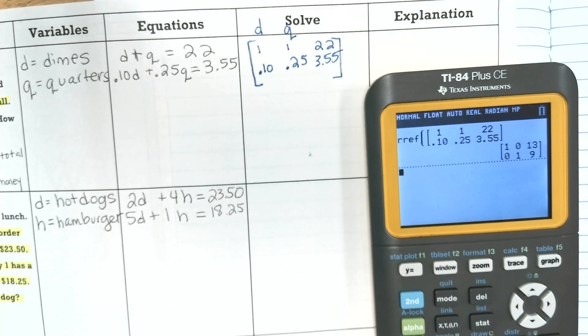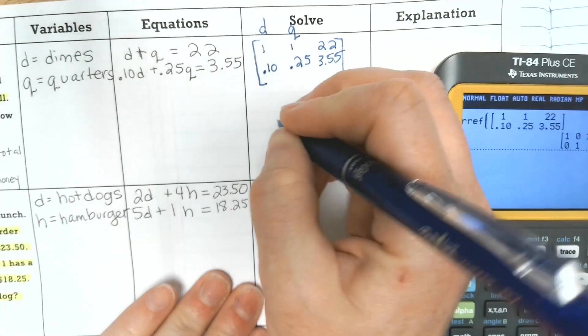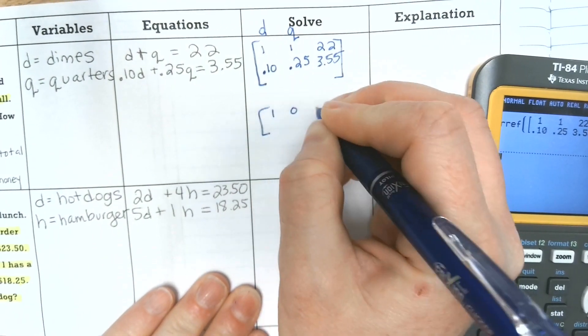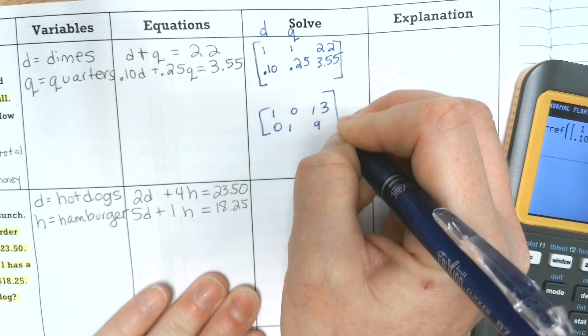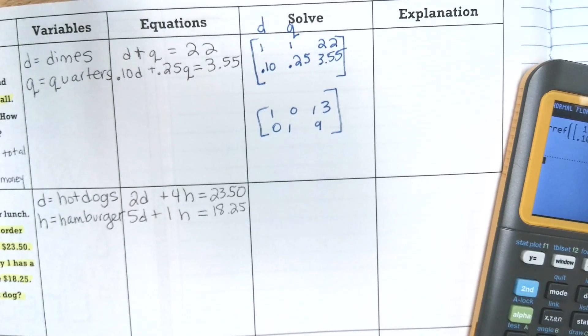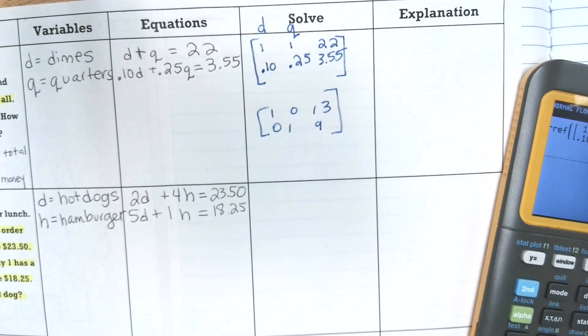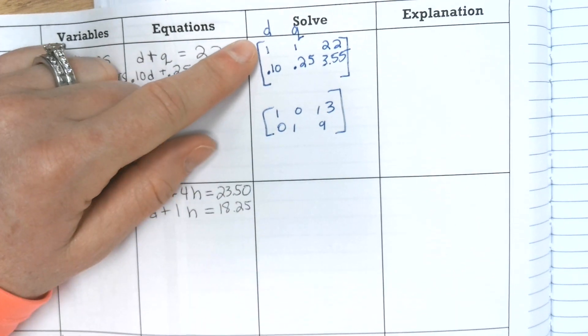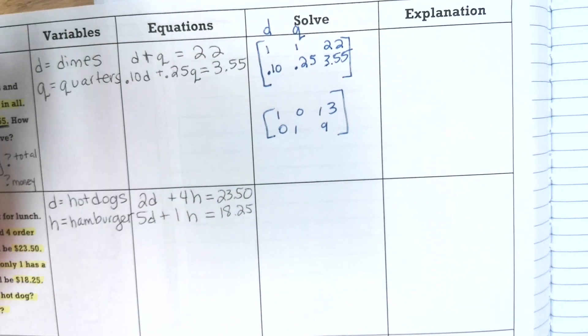And then write down your solution matrix. So whenever we did this with just x and y, we knew it was x comma y. Well, it's a little different here because we have d and q. So you just have to pay attention to your order.